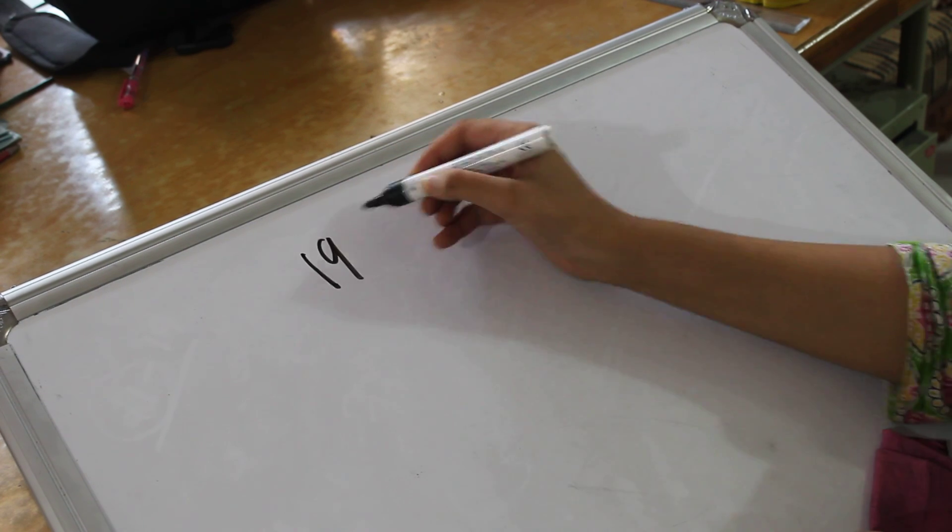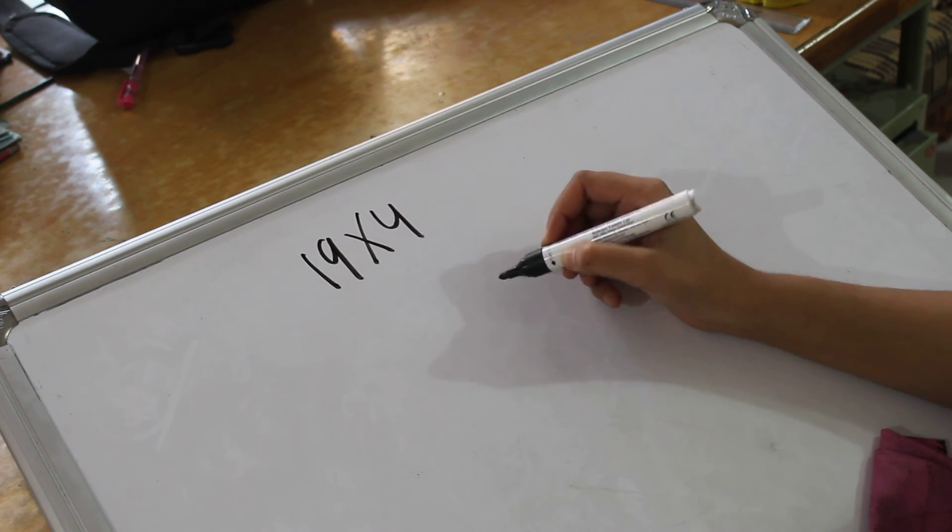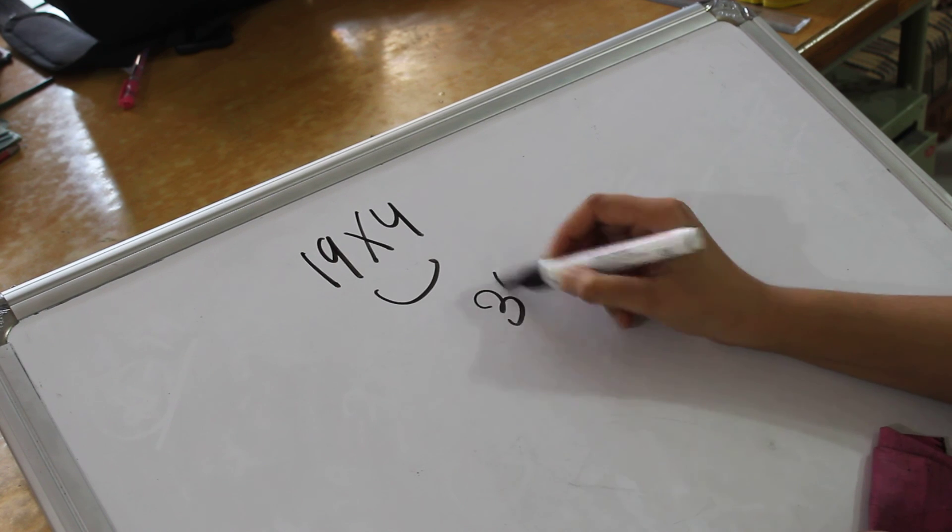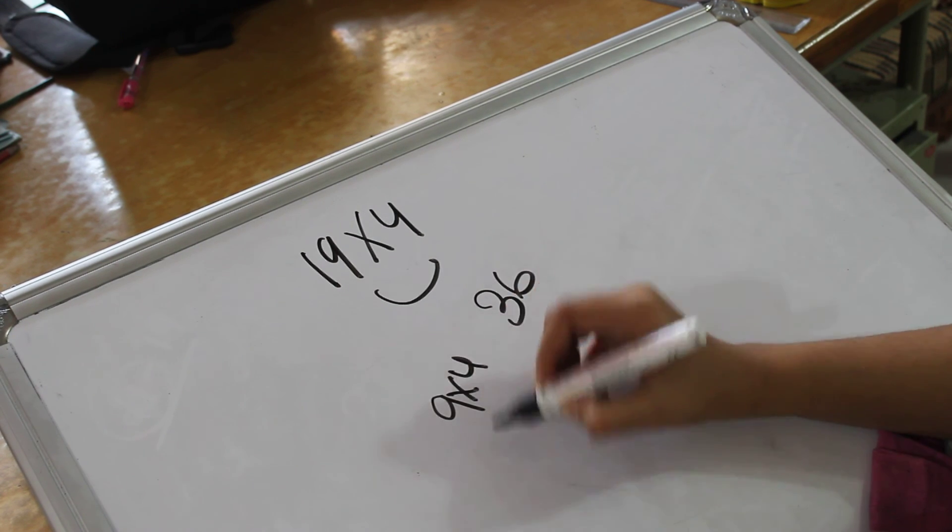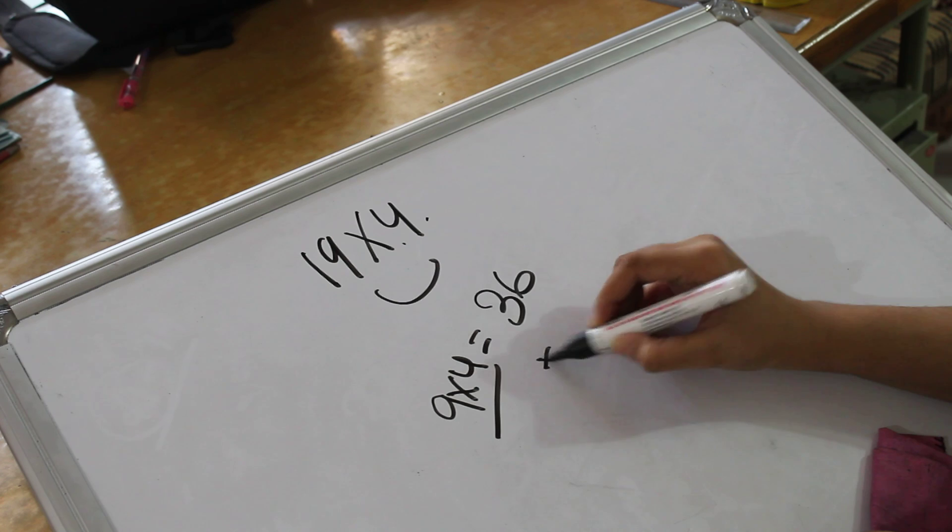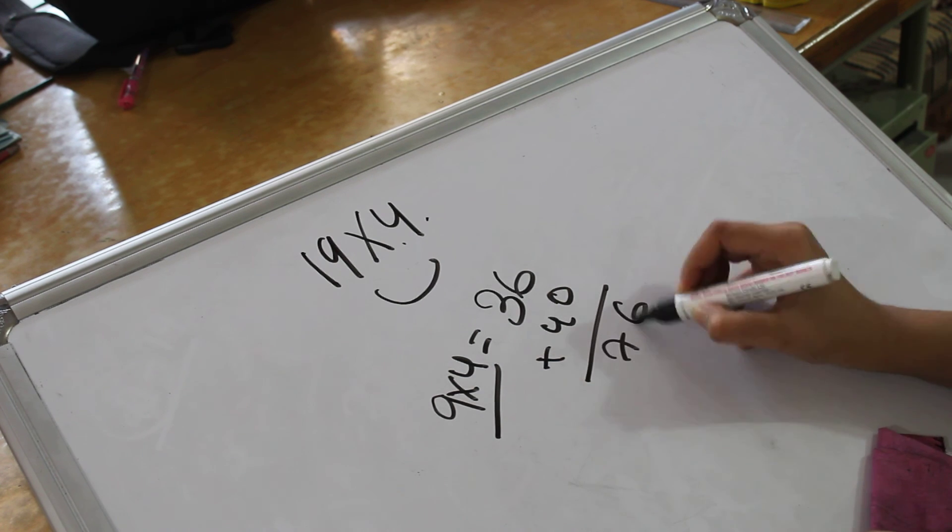Now last one. 19 into 4. How much is this? This is 36, as we know. 9 into 4 is 36. Plus 40. So that would be 76.